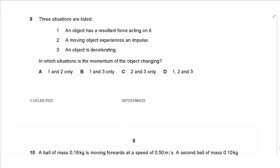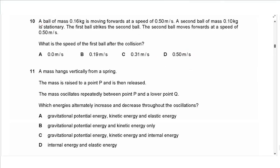Question 9 lists three situations: an object has a resultant force acting on it; a moving object experiences an impulse; and an object is decelerating. In all three cases, momentum is changing because momentum equals mass times velocity, and in each case the velocity is changing — a resultant force causes acceleration, impulse equals force times time (so there is a force changing velocity), and deceleration means velocity is changing. So the answer is D: all three.